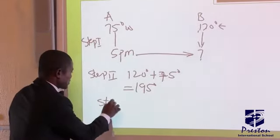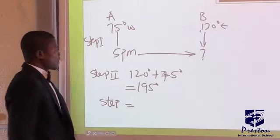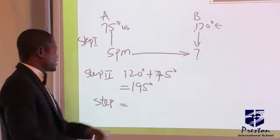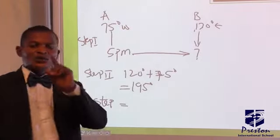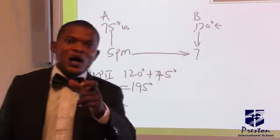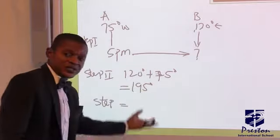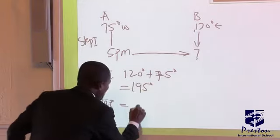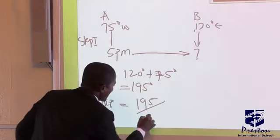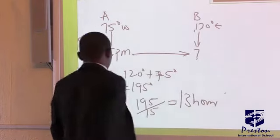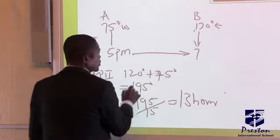The third step: we convert the longitude differences to time by dividing by 15, because the earth rotates through 15 degrees in one hour. Therefore, you are going to divide the given longitude differences by 15. That is why you have 195 divided by 15, which gives you 13 hours. This is step three.